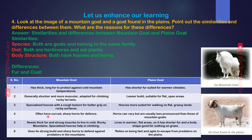Mountain goat often has curved, sharp horns for defense. Plain goat's horns can vary but are usually less pronounced than those of mountain goats. Reasons for differences: Mountain goat needs thick fur and strong muscles to live in cold, rocky mountains, and specialized hooves help in climbing. Plain goat lives in warmer, flat areas, so it has shorter fur and a body shape good for walking on grass. Mountain goat uses its strong build and sharp horns to defend against predators in the mountains, while plain goat relies on being fast and agile to escape from predators on the plains.